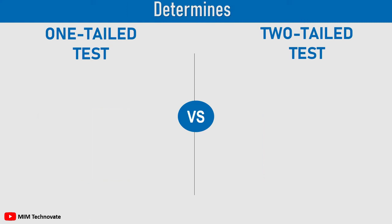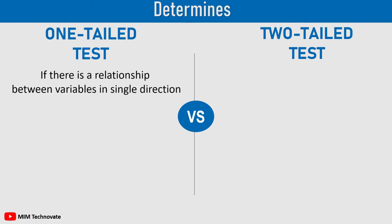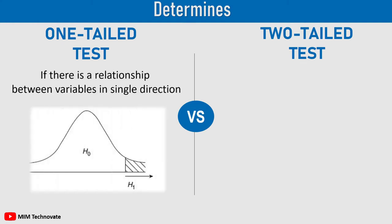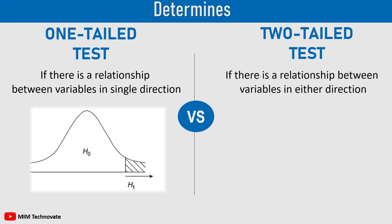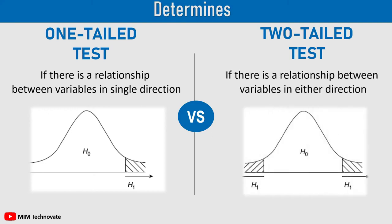A one-tailed test is used to ascertain if there is any relationship between variables in a single direction, i.e., left or right. Whereas the two-tailed test is used to identify whether or not there is any relationship between variables in either direction.